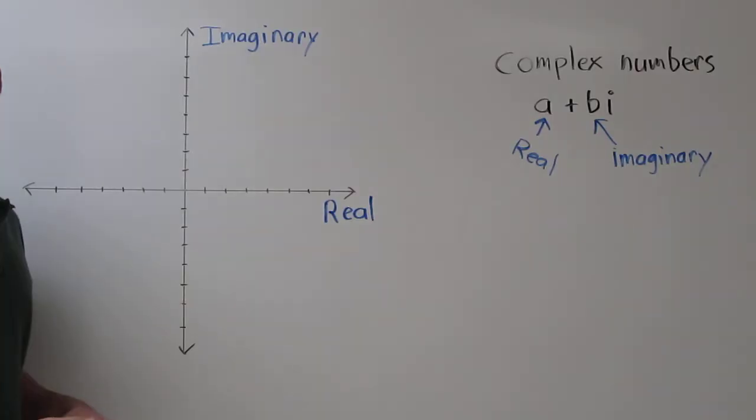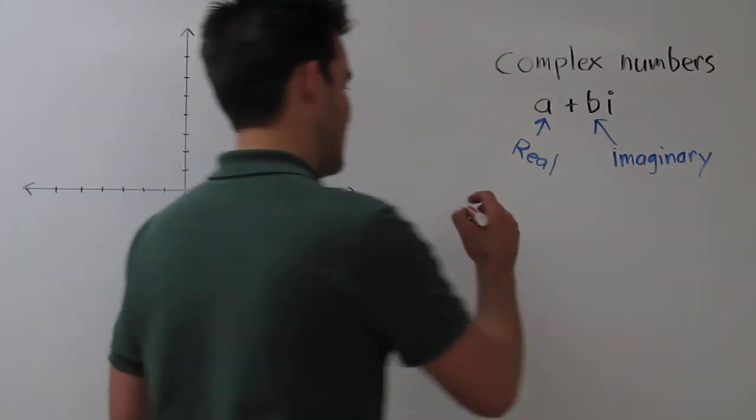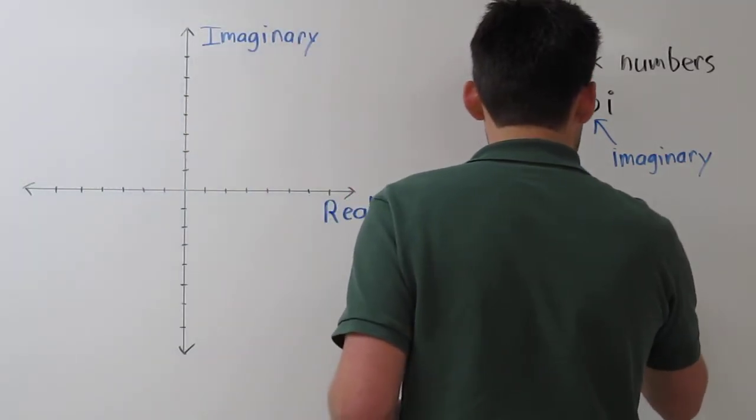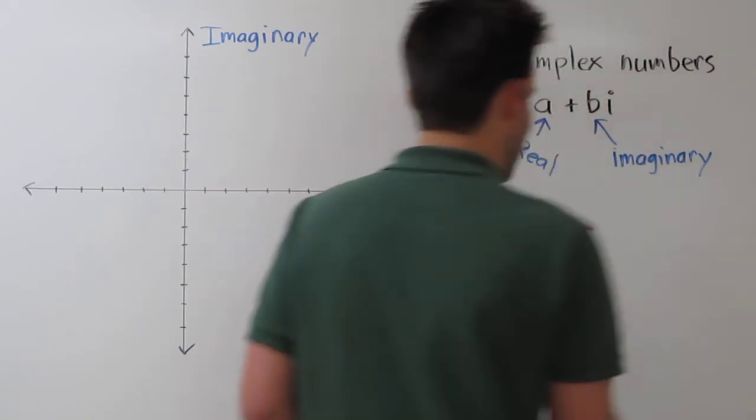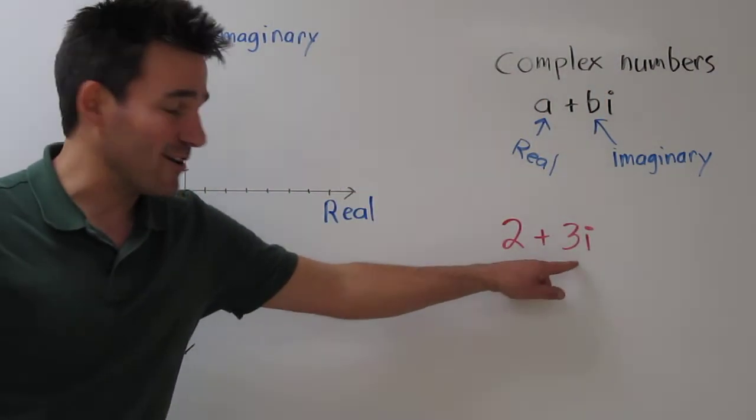Now we're ready to plot some complex numbers. We'll start with the pink one. We're going to plot 2 plus 3i. Now the real part is 2, and the imaginary part is 3.